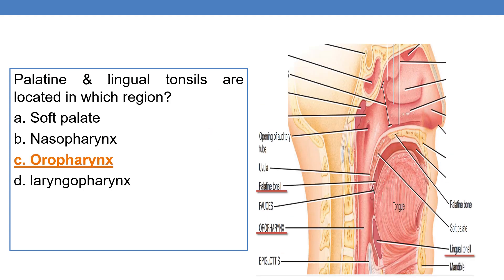The palatine and lingual tonsils are located in which region? Here you can find the palatine tonsil and the lingual tonsil. Both palatine tonsil and lingual tonsil are present in the oropharynx. So the region of the pharynx which has palatine and lingual tonsils is the oropharynx — option C is the correct answer.